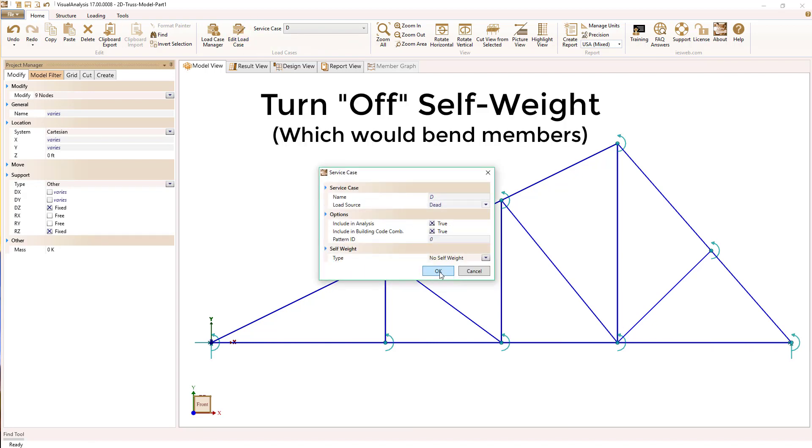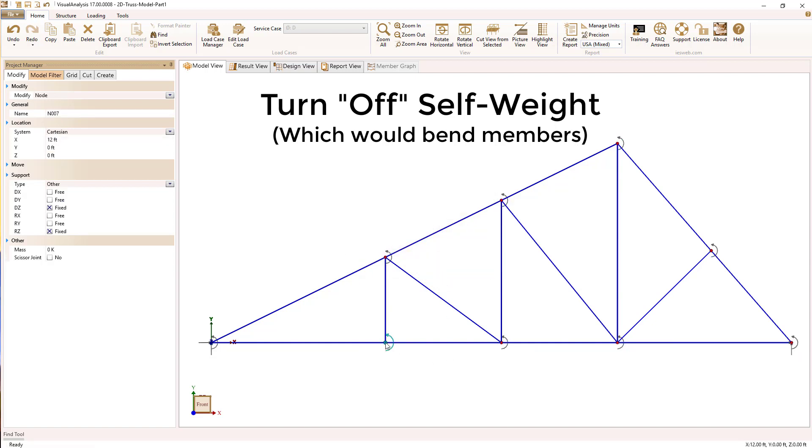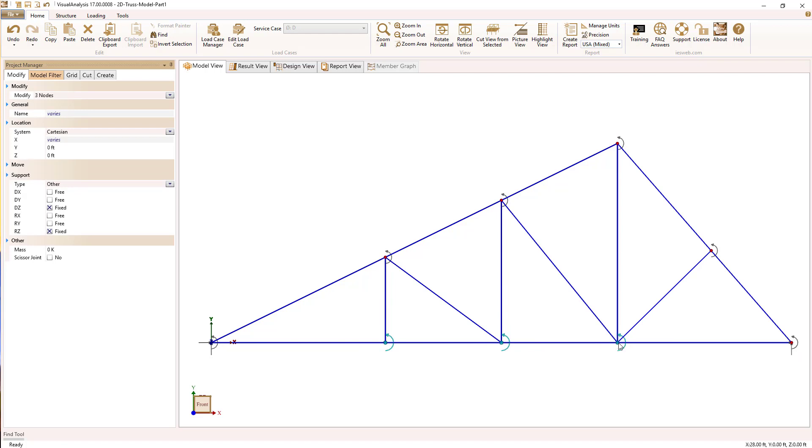The other thing we need to do is eliminate the automatic self-weight that Visual Analysis will include, because that would create bending in the member.